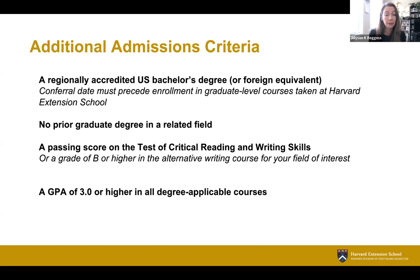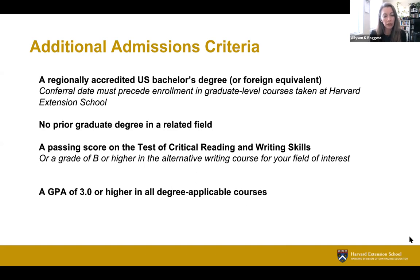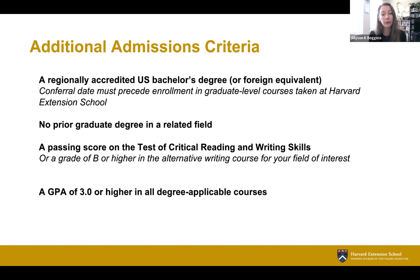I recommend attempting the writing test early so you don't have trouble registering for the pro seminar. In addition to earning grades of B or higher in your admission courses, you will need to maintain a minimum GPA of 3.0 in all degree-applicable courses to be admitted. For example, if you complete the international security graduate certificate first and then take the pro seminar for admission, all five courses will be counted in your GPA calculation.